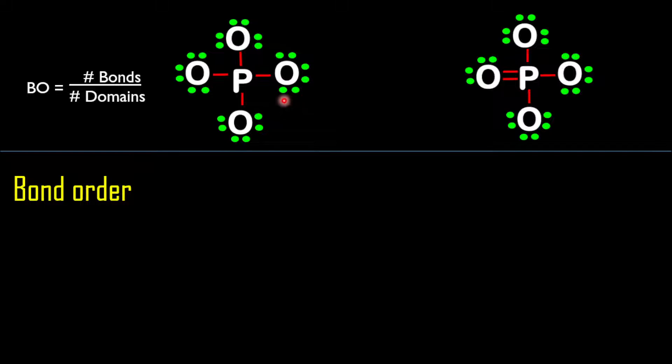Looking at the first structure, you realize that there are four single bonds. So if you have a total of four bonds, and checking the number of domains, we have one, two, three, four domains. Therefore, the bond order for this structure is four divided by four, which equals one.